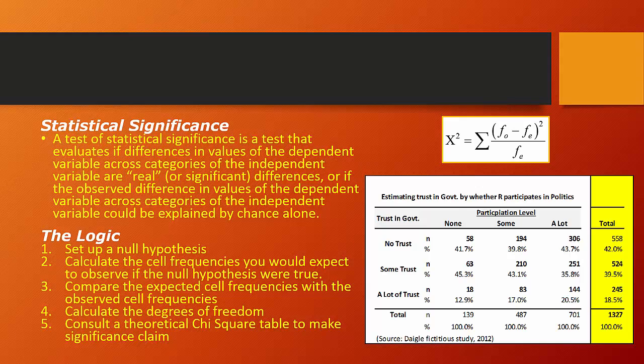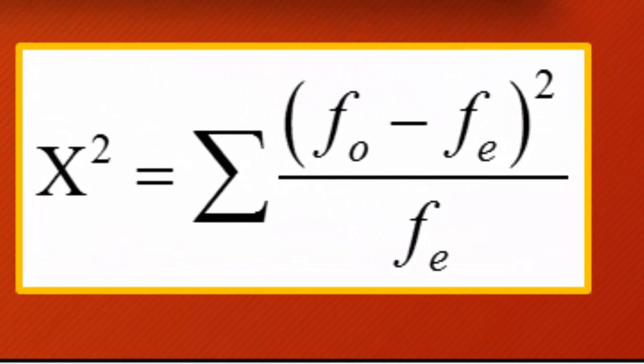Looking at the chi-square formula, we show a summation of how much each cell in a table deviates from an expected value for that cell if the null hypothesis were completely accurate — i.e., if all the cells across all categories of the independent variable had precisely the same proportion of observations across the values of the dependent variable.